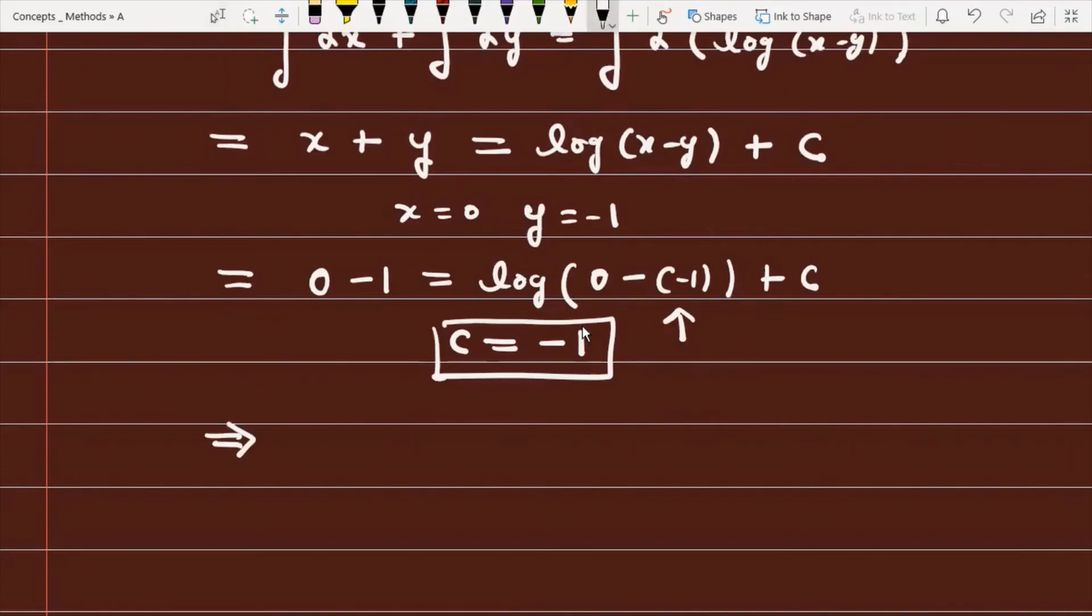Replace C with -1, and you get x + y = log(x-y) - 1. That is the solution.